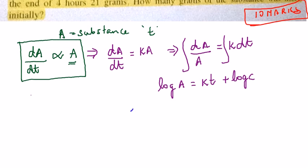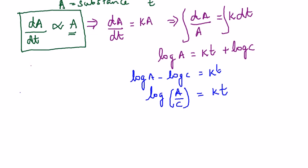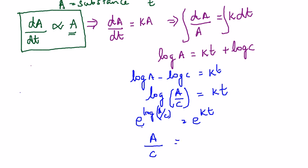We can rewrite this as log A − log C = kt. By the division rule of logarithms, log A − log C = log(A/C). Taking e to the power on both sides: e^(log(A/C)) = e^(kt). Since e^(log x) = x, we get A/C = e^(kt), and therefore A = Ce^(kt).